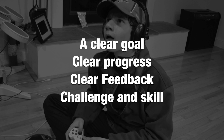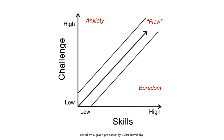To reach a flow state, you need to support a number of things: a clear goal you're working towards, clear progress towards completing that goal, clear and immediate feedback on how you're going, and a balance of challenge and skill. As shown in the graph, you're in a flow state when your challenge matches your skill level. If your skills are too high and the challenge too low, you'll feel bored. If the challenge is too high and skills too low, you'll feel anxious.